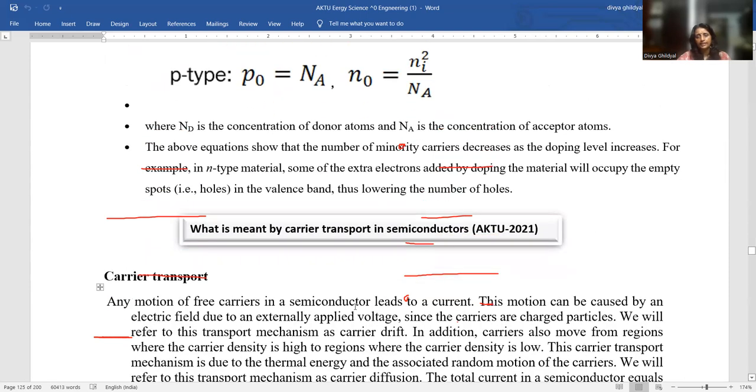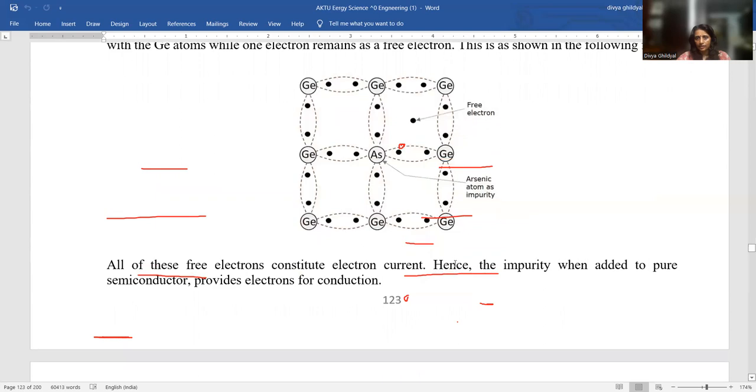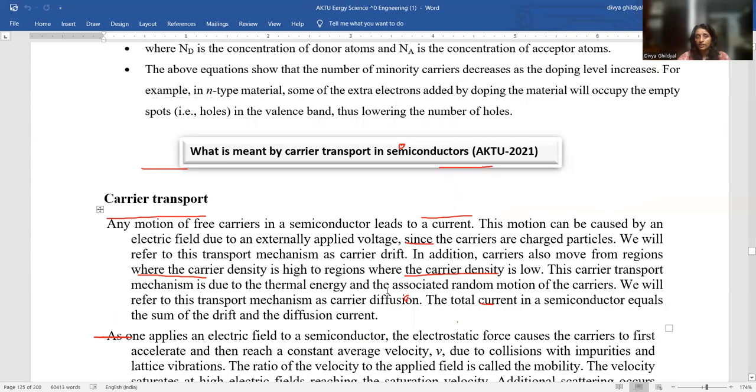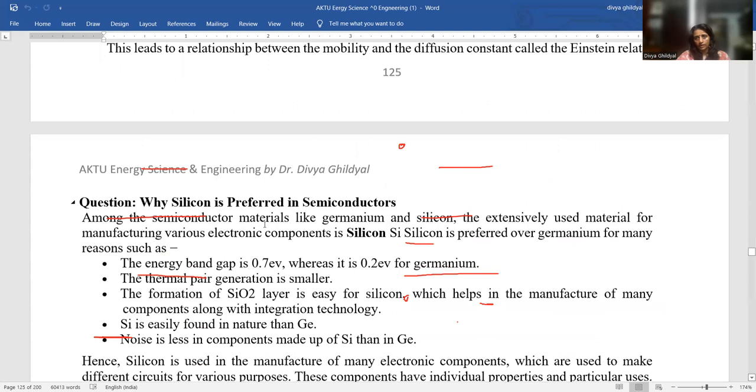What is meant by carrier transport in semiconductors? This is exactly what I explained you right now. Carrier, see, this electron lying here, this is a carrier. The hole here that is lying is a carrier. Why? Because now this is going to constitute the electric current. So any motion of free carriers in a semiconductor will lead to current. This can be caused by an electric field due to an externally applied voltage because the carriers are charged particles. And if one applies electric field to a semiconductor, the electrostatic forces cause the carriers to accelerate and reach a constant average velocity, after which they go ahead to carry the current.